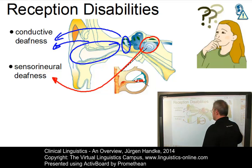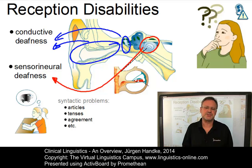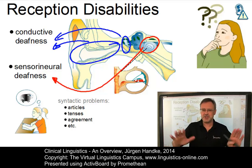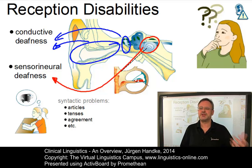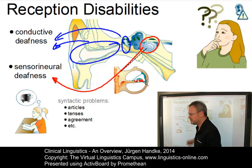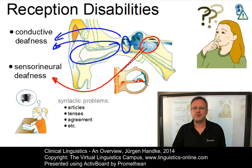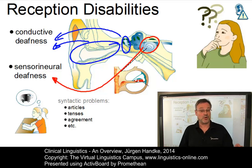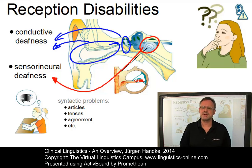Deaf patients have difficulties constructing sentences grammatically even in writing. For instance, they often have problems with articles, with tenses, with agreement, with prepositions and so on. Moreover, their sentence structure is extremely restrictive.